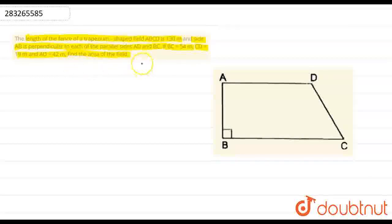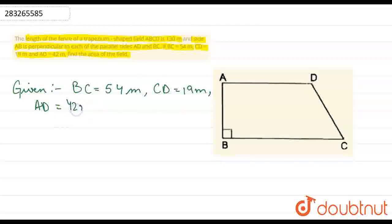We need to find the area of this field. What will we do? First, we'll write down what is given. Given: BC equals 54 meters, CD equals 19 meters, AD equals 42 meters, and perimeter equals 130 meters.